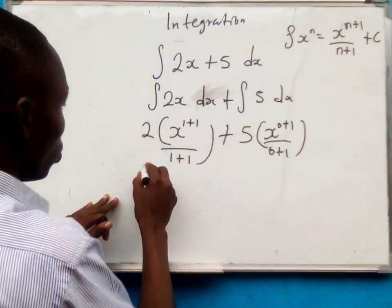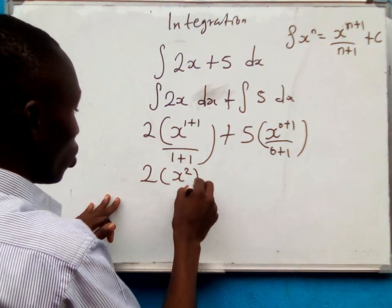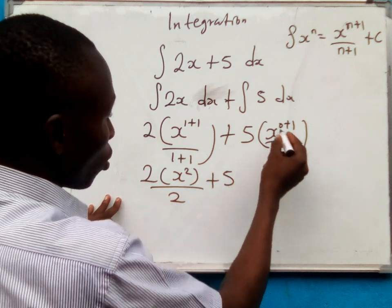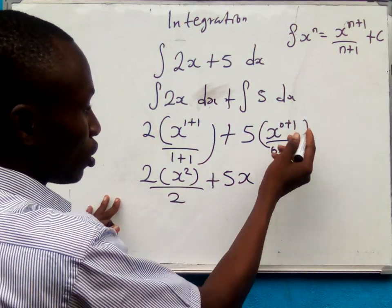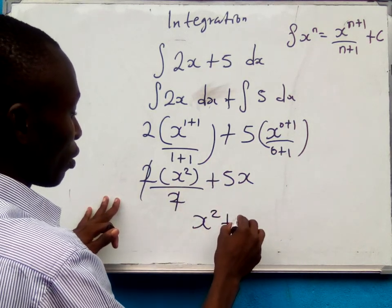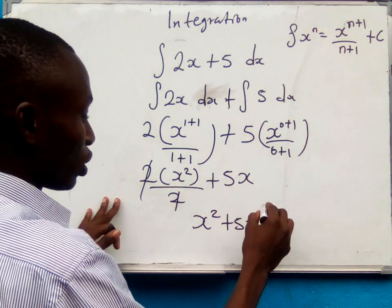This will be 2 times x to the power of 2 all over 2, plus 5x. Now 2 will be cancelled out. And you are left with x squared plus 5x plus your integration constant c.